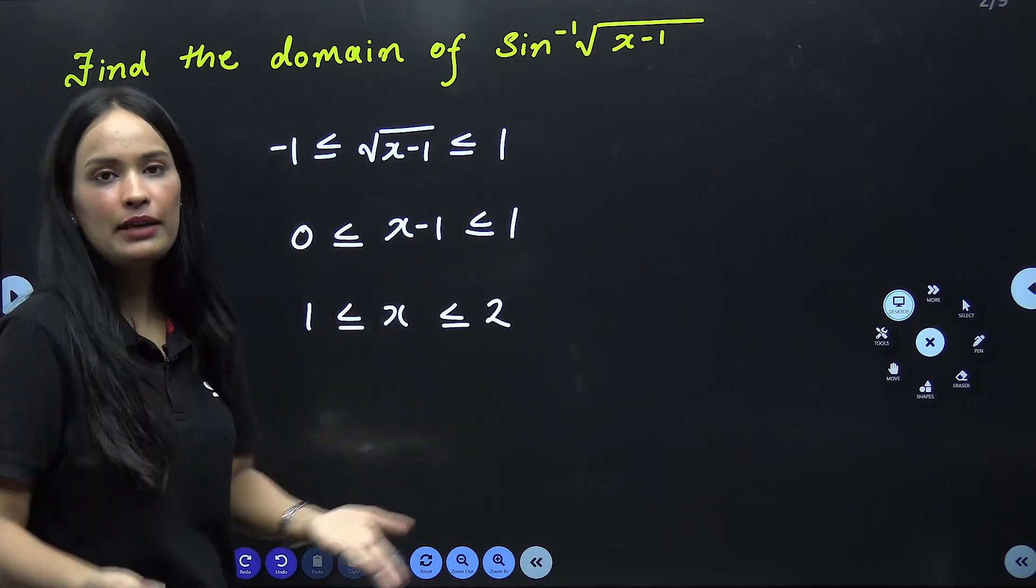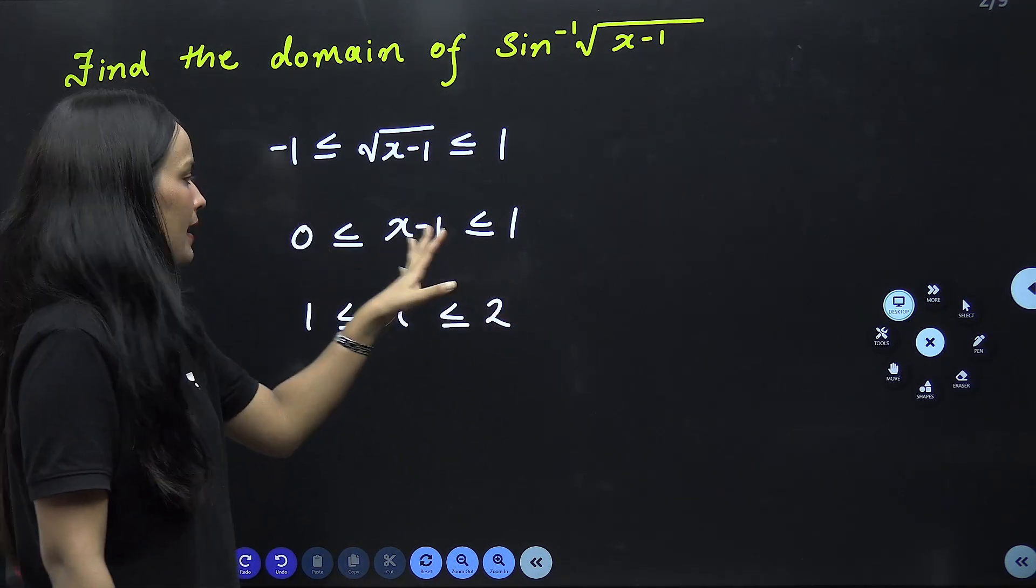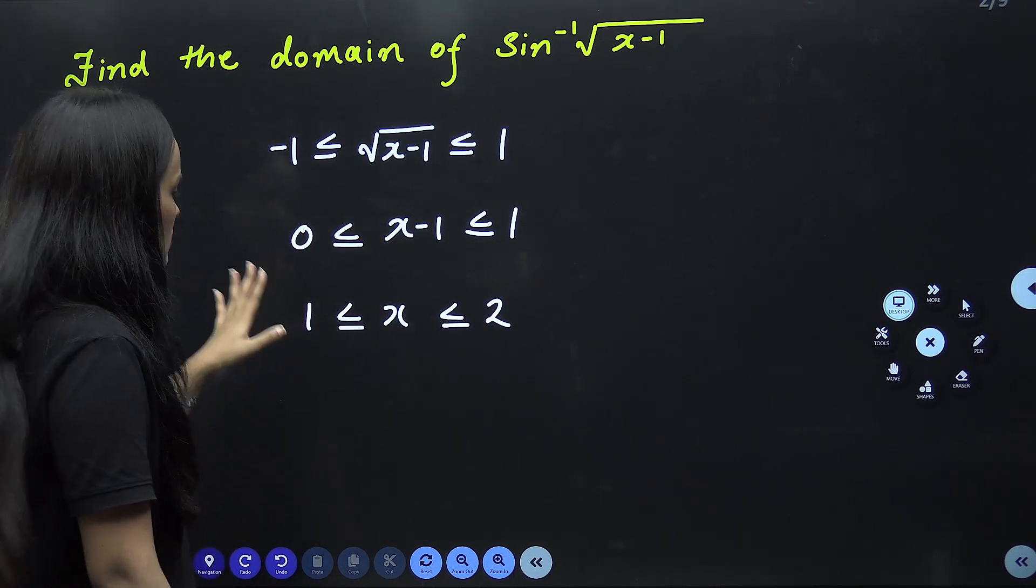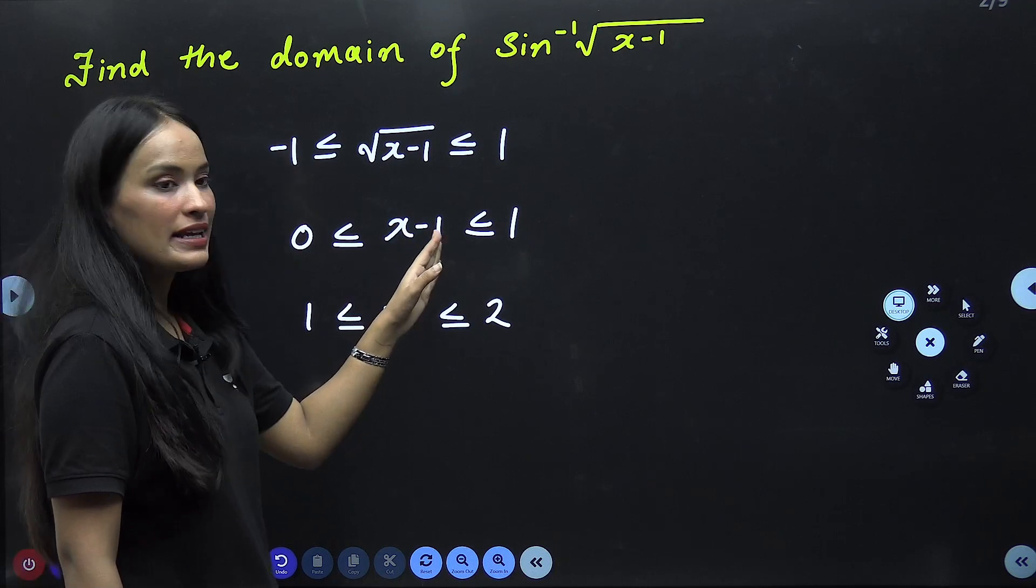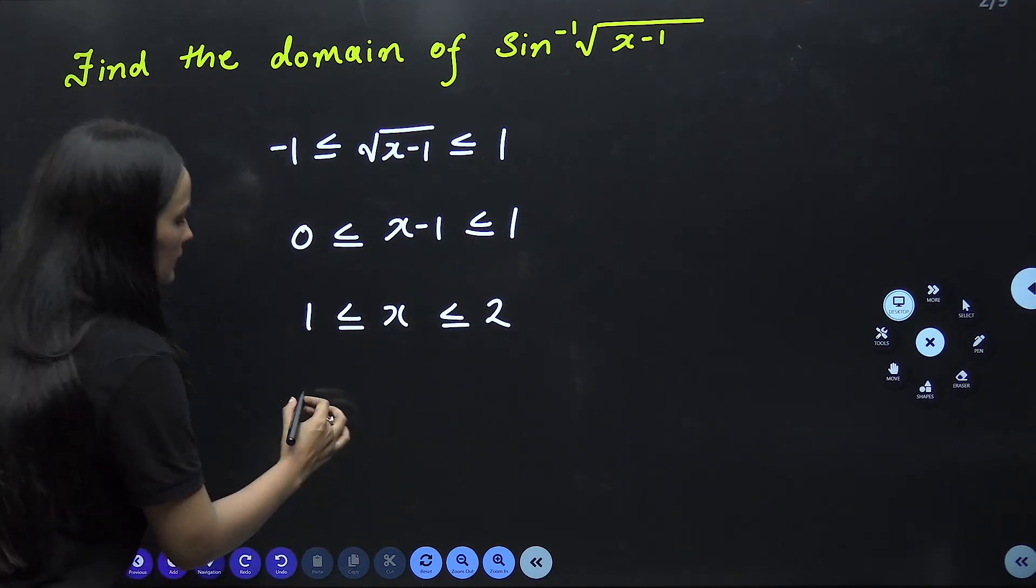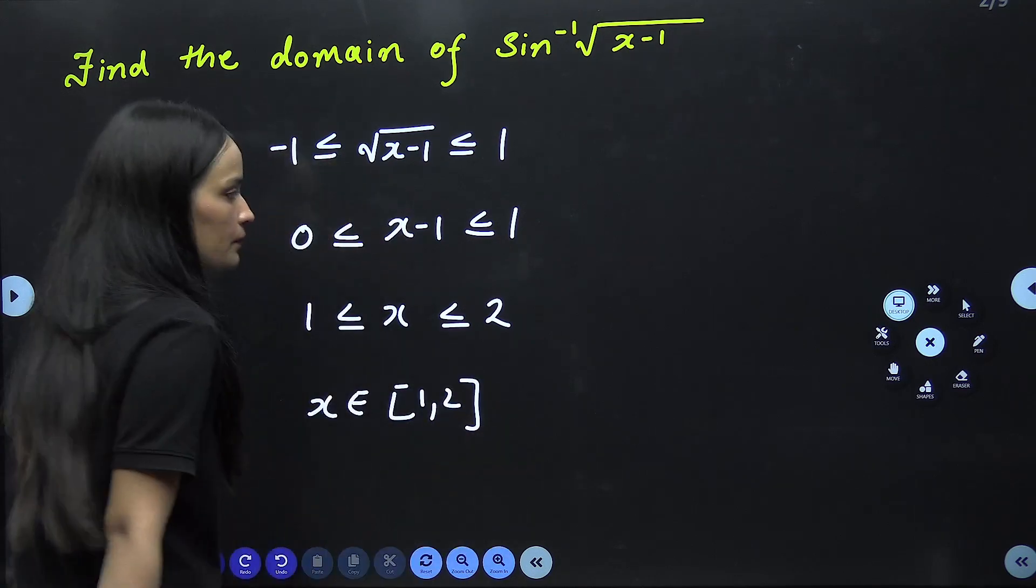If you go to positive, what will it be? You will start from 0. So this will be 0 to 1. Then you will make it single. How will it be? Entire inequality plus 1. So this will be 0 plus 1 is 1, x minus 1 plus 1 will be x, and 1 plus 1 is 2. So here you are seeing that your x belongs to closed interval 1 to 2. What does this mean?